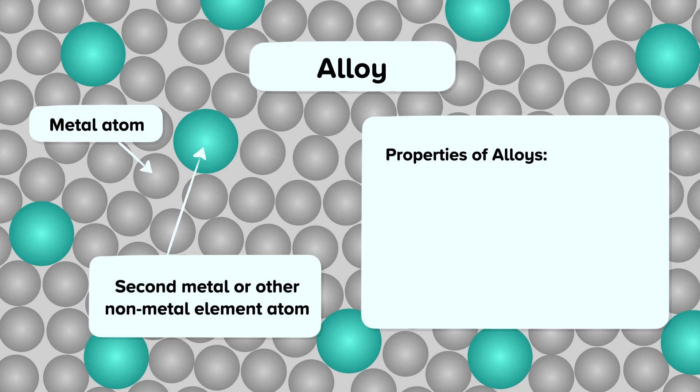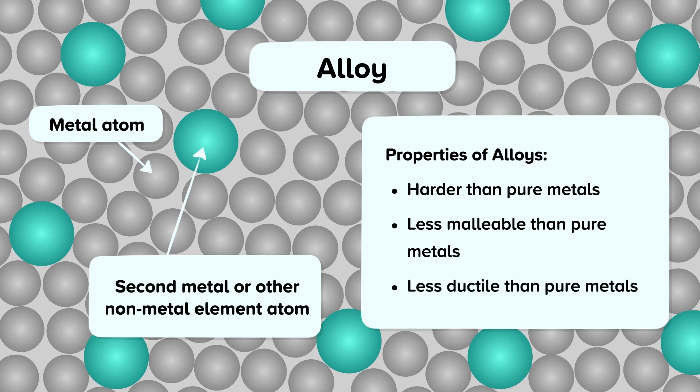Properties of alloys. Alloys are harder than pure metals. They are less malleable than pure metals and less ductile than pure metals.